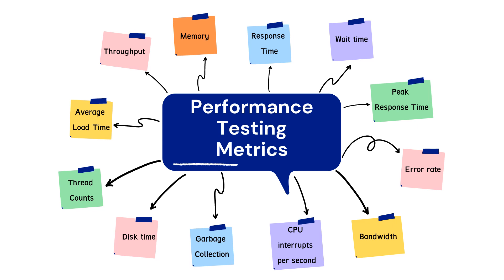Additional metrics include: error rate — the percentage of requests resulting in errors compared to all requests, which usually occur when load exceeds capacity; bandwidth — the volume of data per second that can move between workloads across a network; CPU interrupts per second; garbage collection — returning unused memory back to the system, which needs to be monitored for efficiency; disk time — the amount of time a disk is busy executing read or write requests; thread counts; and average load time — the average time to deliver every request, a major indicator of quality from a user's perspective.